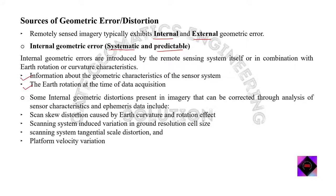Internal geometric distortions present in imagery can be corrected through analysis of sensor characteristics and ephemeris data. These include: scan skew distortion caused by earth curvature and rotation effects, scanning system induced variation in ground resolution cell size, scanning system tangential scale distortion, and platform velocity variation. Each of these will be explained one by one.